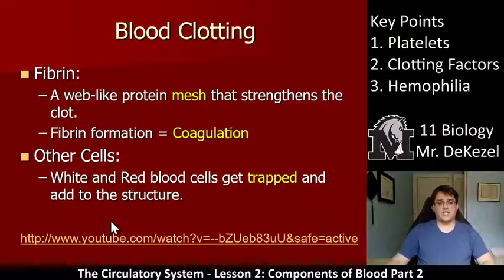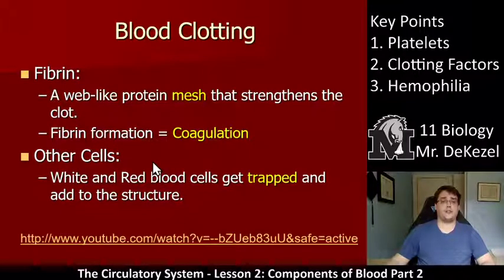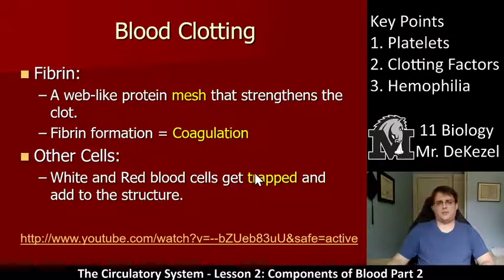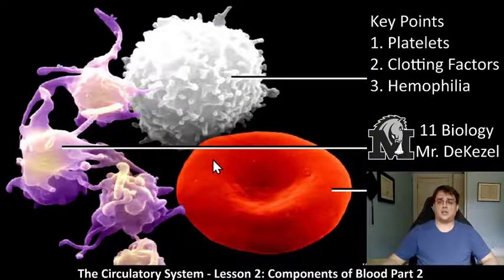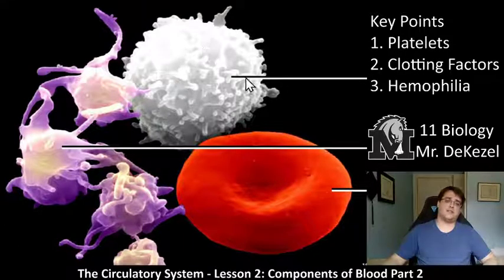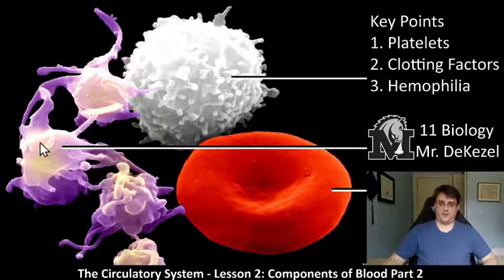Once fibrin is there, it forms a stronger plug. Other cells — white and red blood cells — get trapped by the platelets and the fibrin, adding to the structure. That's why your scabs are red: they're mostly red blood cells trapped in the clot. Check out the video with the cards for another explanation and point of view. In the diagram here, you can see the red blood cell, the white blood cell (the large chunky thing), and the platelets — which in reality are much smaller but you can see how spiky and hooked they are.